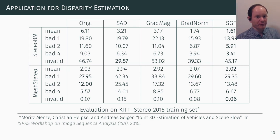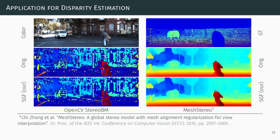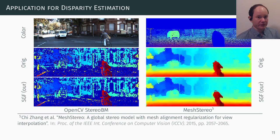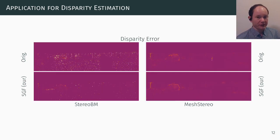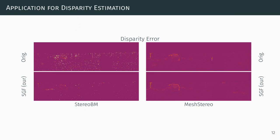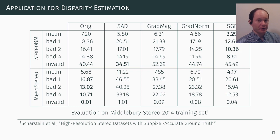For mesh stereo, the difference between the measures is minimal, since block match disparities are used as the initializations. We obtain with our measure, especially for stereo block matching, more precise disparity maps with less dispersed erroneous measurements.